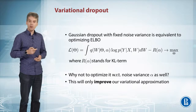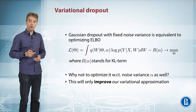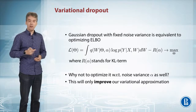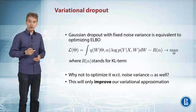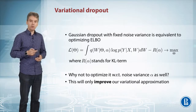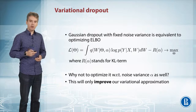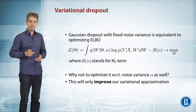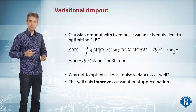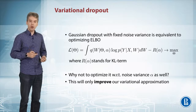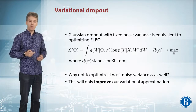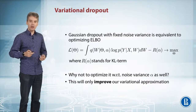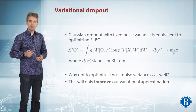Now the question is: why not optimize both with respect to θ and α? Remember that our variational approximation, our Q of W, depends on both θ and α. And remember that the more variational parameters we have, the closer we are to the true posterior distribution. So we may only make our approximation better and better.